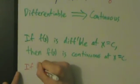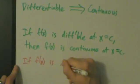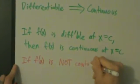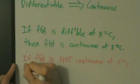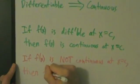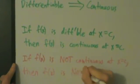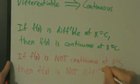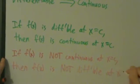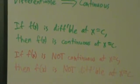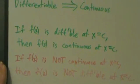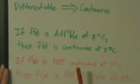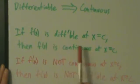This automatically means that if f(x) is not continuous at x equals c, then f(x) is not differentiable at x equals c. If you know a little bit about logic, this statement and this statement are contrapositives, and a statement and its contrapositive always have the same truth value.